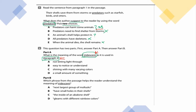Part B: Which phrase from the passage helps the reader understand the meaning of iridescent? Is it A, next largest group of mollusks; B, have small holes in their shells; C, the inside of abalone shell; or D, gleams with different rainbow colors? I hope you've chosen your best answer for part B. Remember, when your question has two parts, both must be answered correctly to get credit.